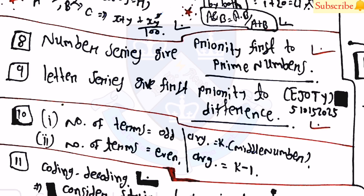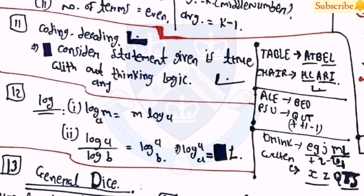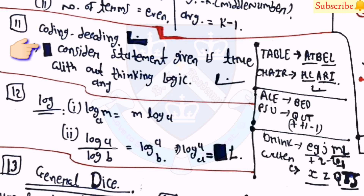If the number of terms is odd, the average equals k; if even, average equals k − 1. In coding and decoding questions, you must consider the given statement as true without applying simple real-world logic — for example, if the statement says the sun rises in the north, you must accept it as true. Do not apply common sense logic in coding and decoding questions.